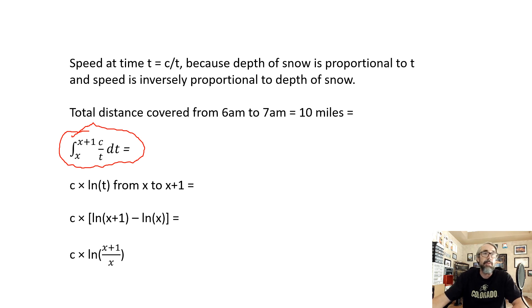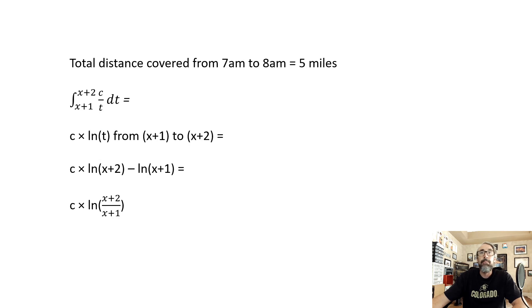And let's next do the same thing for the second hour. That five miles traveled in the second hour can be represented as the integral or the sum of all the speeds from time x plus one to x plus two. And taking the integral there, that's c from the natural log of t from x plus one to x plus two, which works out to c times the natural log of x plus two over x plus one.